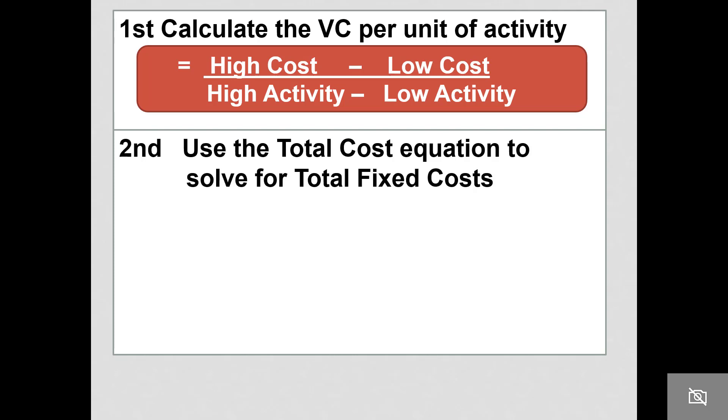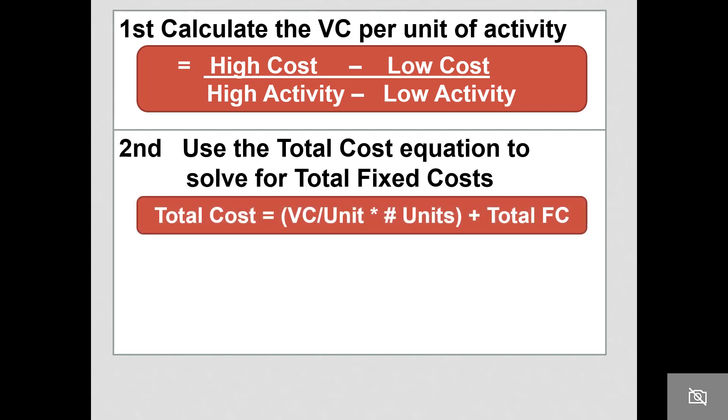Then, you can use the total cost equation to solve for total fixed costs. This is the total cost equation: variable cost per unit times number of units plus total fixed cost.